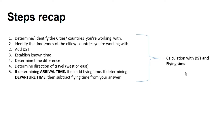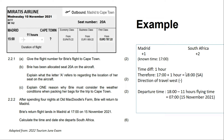Step five is where things get interesting. If we are determining the arrival time — meaning we have been given the departure time — we add the flying time. But if we are determining the departure time — meaning we have been given the arrival time — then we subtract the flying time to find the answer.